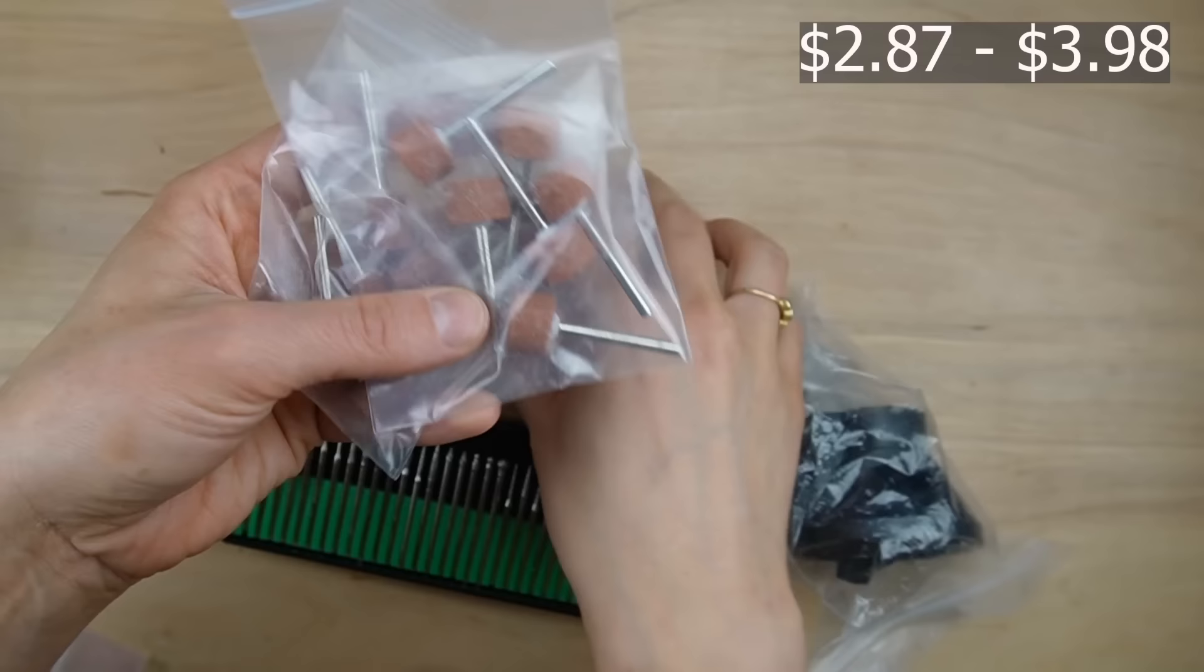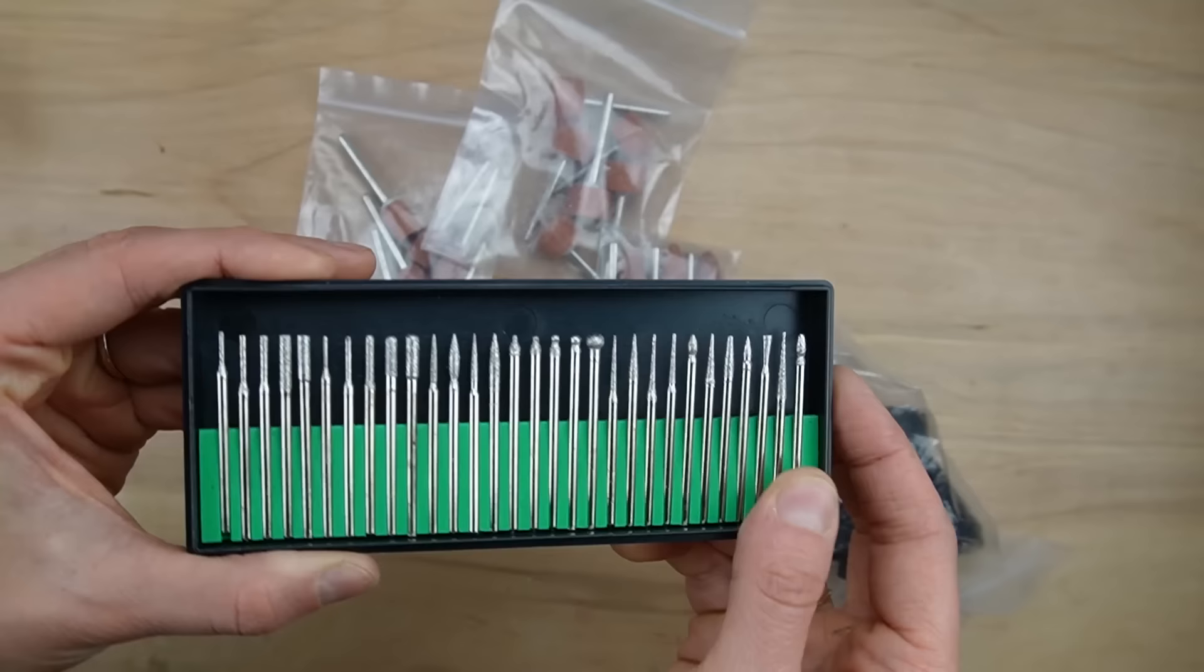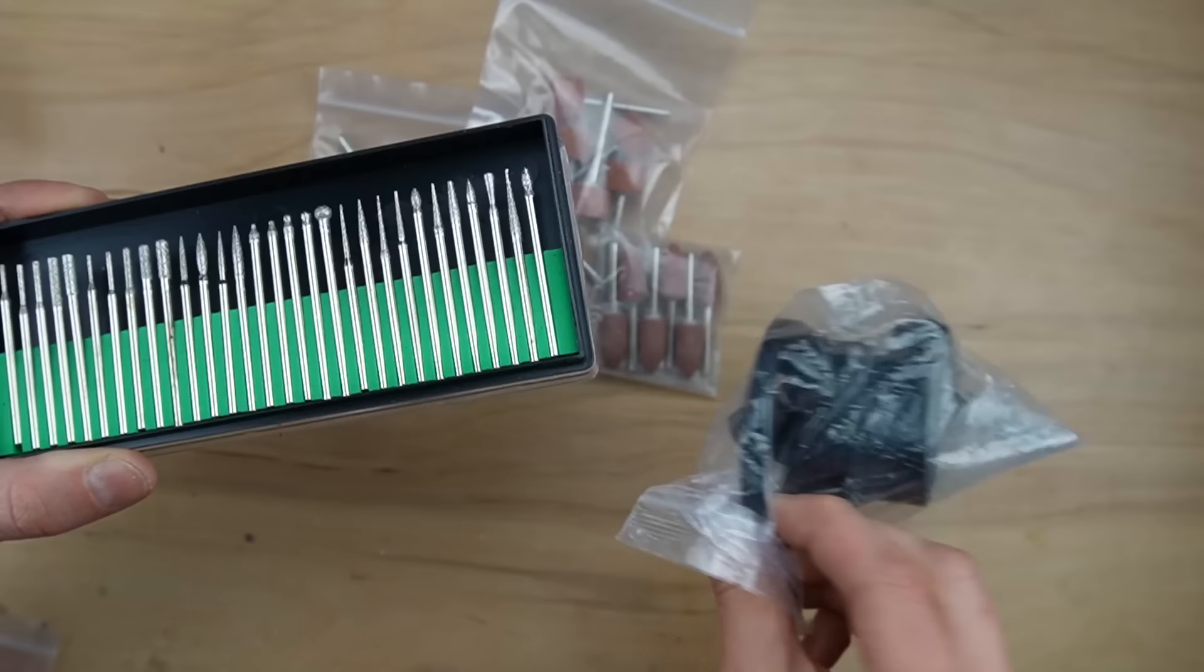I got these generic sanding discs for a Dremel-like rotary tool. I got these little carving bits. Maybe you'll see me carving wood on my channel. This is a plunge cutter.